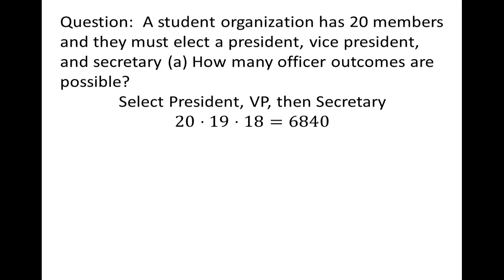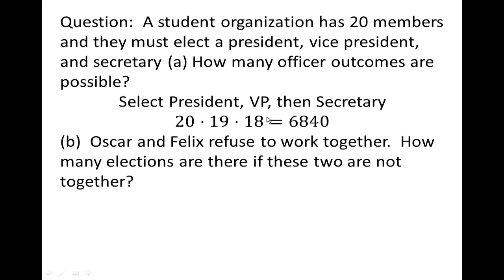Now a special case: what if Oscar and Felix are always butting heads and refuse to work together? How many elections are possible if these two are not in the same officer group? We think about different types of outcomes — counting by cases. Oscar could hold one office but Felix cannot hold any other, Felix could hold one office but Oscar cannot, or neither of them holds an office. So we have three different cases.